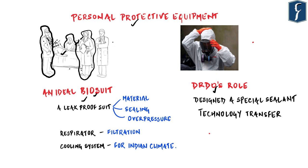Personal protective equipment, or biosuits, are used not just for viral infections but also against chemical agents, nuclear agents, and firefighting. First and foremost, a biosuit should be leak-proof, meaning no material — not even air — can enter or exit. The person coming from outside, like a medical professional, might also carry infections harmful to the patient, so all contact between inside the suit and outside must be cut off.